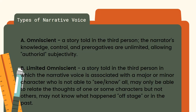The difference between omniscient and limited omniscient is that omniscient knows everything about all characters, even their past or backstory. Limited omniscient is limited to a specific major or minor character, and this narrator may only know some information about the characters — he doesn't have knowledge of the character's full backstory.